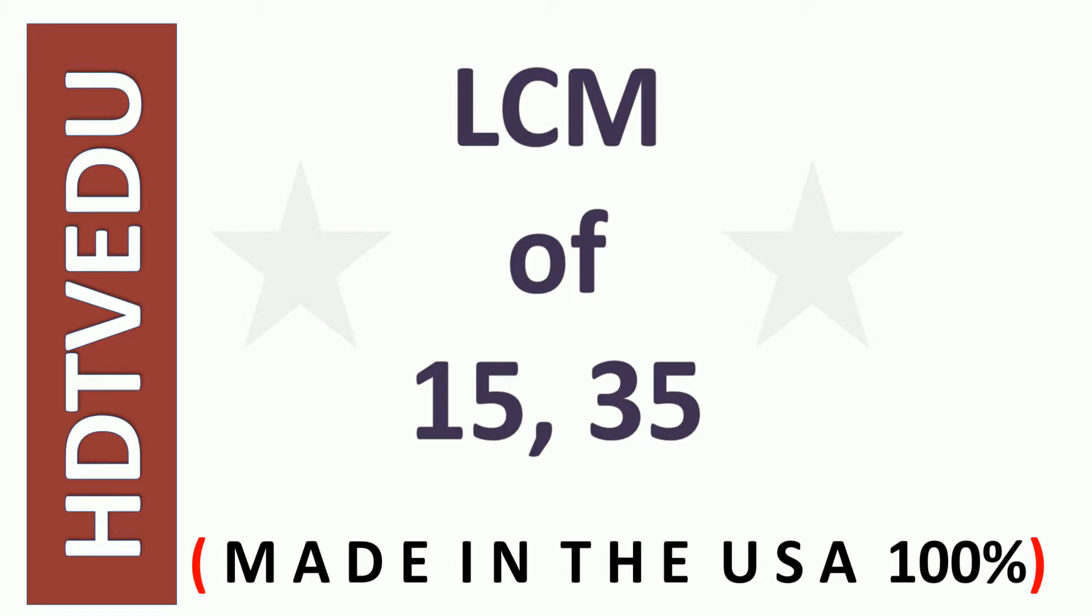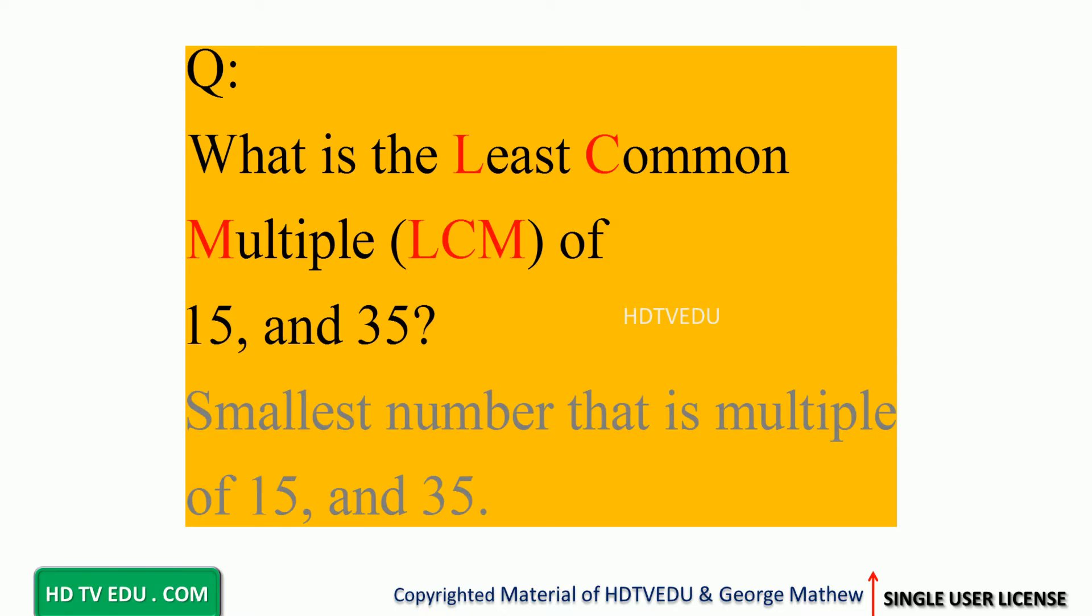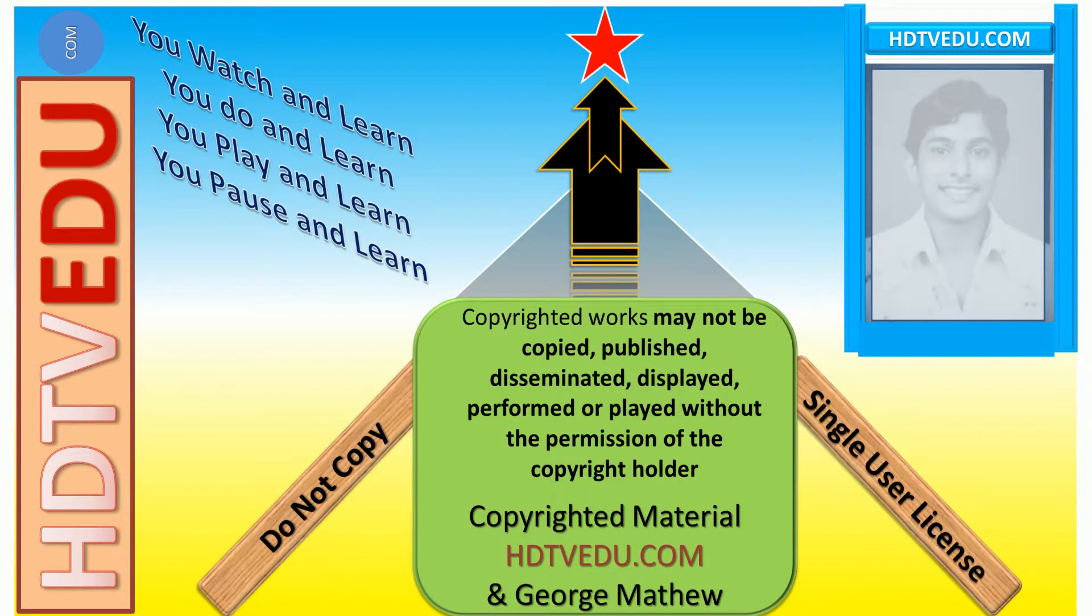LCM of 15 and 35. What is the least common multiple, LCM, of 15 and 35? The smallest number that is a multiple of 15 and 35. Welcome to hdtvedu.com, direct and simple education in seconds.